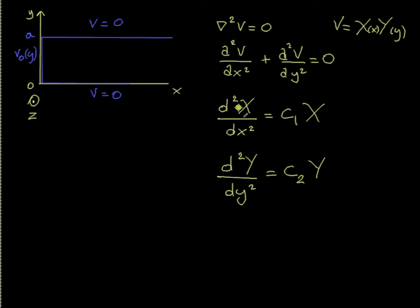These are second-order equations: d squared X with respect to x equals c1 times the function X, and something similar for Y. One of the things that is very, very important for these kinds of problems is the boundary conditions.